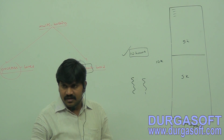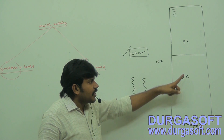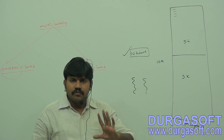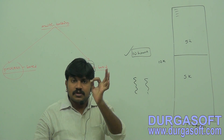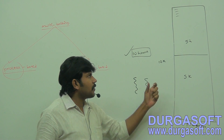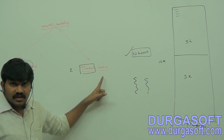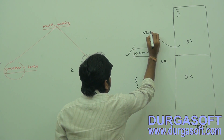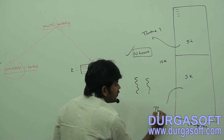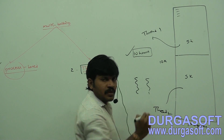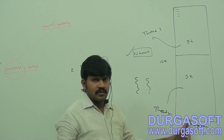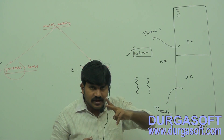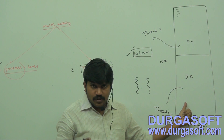Instead of executing one by one, we can execute the two independent parts simultaneously. This is thread-based multitasking — executing multiple tasks simultaneously where each task is a separate independent part of the same program. Each independent part is called a thread. If we execute both parts simultaneously, it is a multi-threaded program.